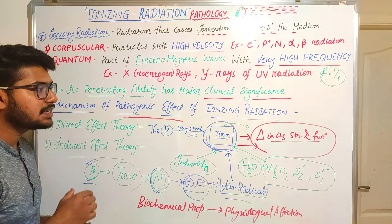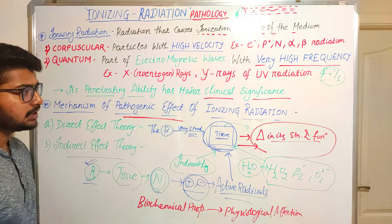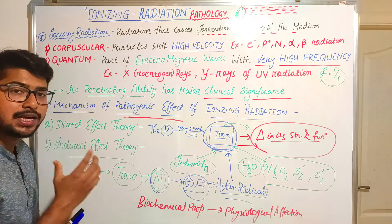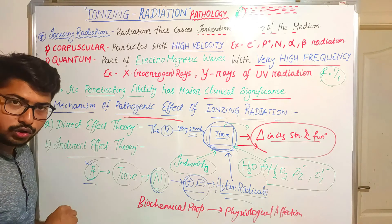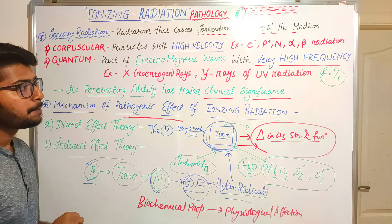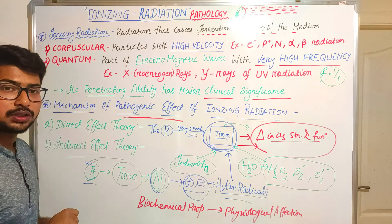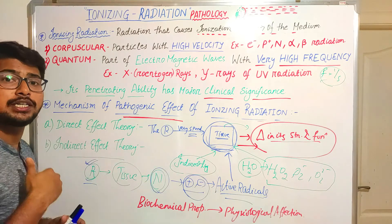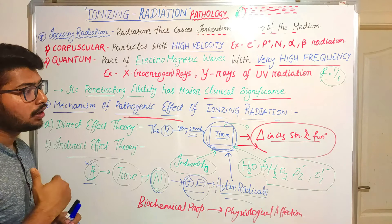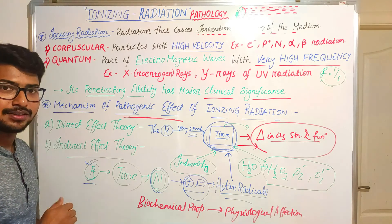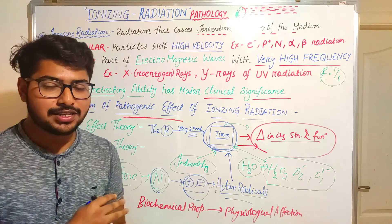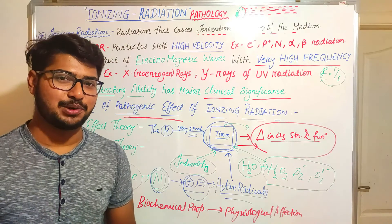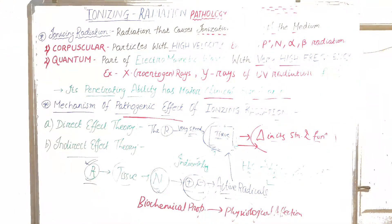The mechanism of pathogenesis of ionizing radiations is a commonly asked question. The answer is there are two theories: direct and indirect theory. In the next video, we will read how ionizing radiation causes different forms of disease according to its doses. Thank you for watching — if it was helpful, please give a like, share, and comment below. Thank you so much, have a great day.